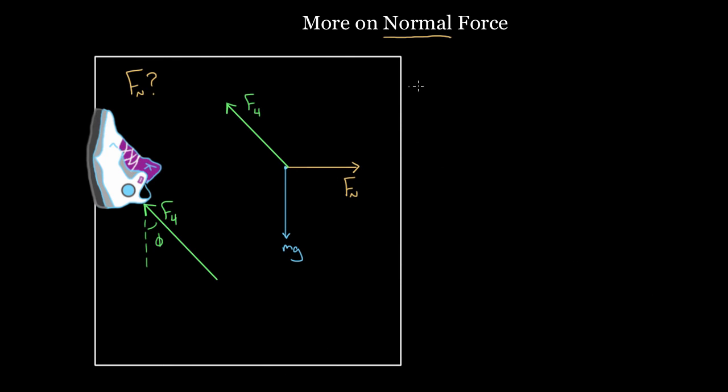Again, we're gonna use Newton's second law. We're gonna use a equals the net force in a certain direction. This time we're gonna use the horizontal direction. We're gonna use the horizontal direction because the force we want to find, our normal force, is in the horizontal direction.